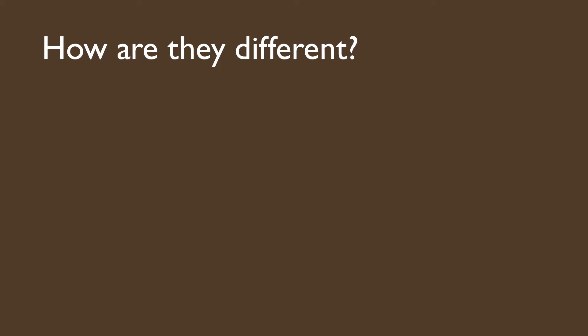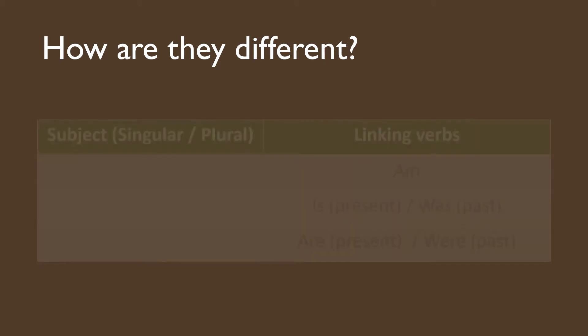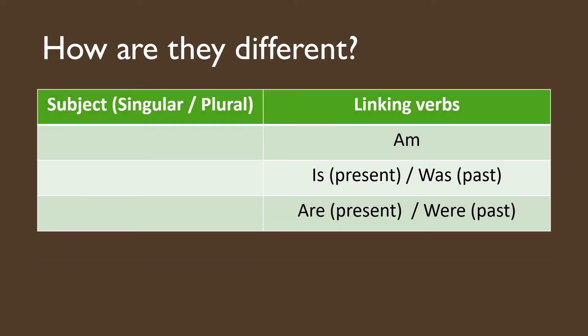The linking verbs we have are: is, are, was, were, and so on. How are they different? We look at this table. We have 'am,' we have 'is,' we have 'was,' we have 'are,' and 'were.' Firstly, 'is' is used in the present tense and 'was' is used in the past tense. 'Are' for present tense and 'were' for past tense. We will learn about tenses in detail after this — not for this slide. And 'am' is for present tense.